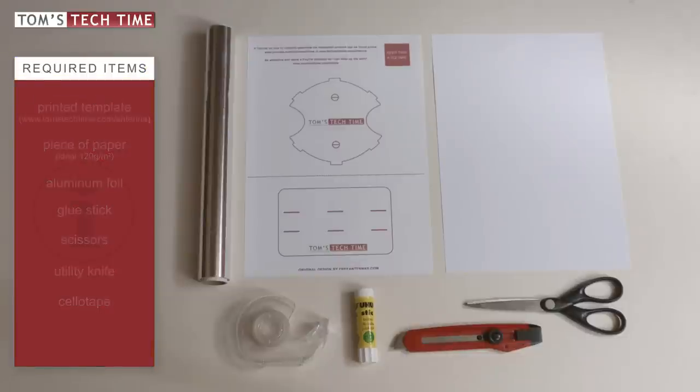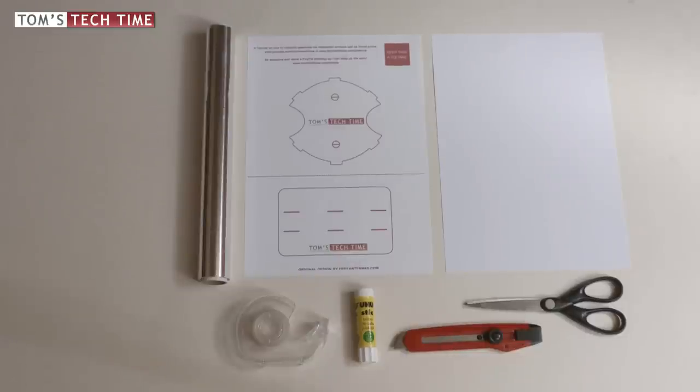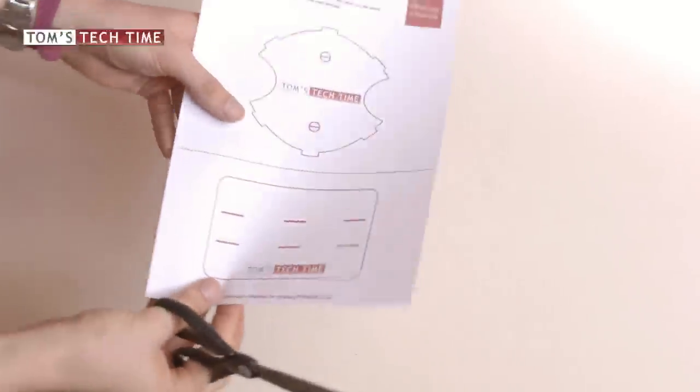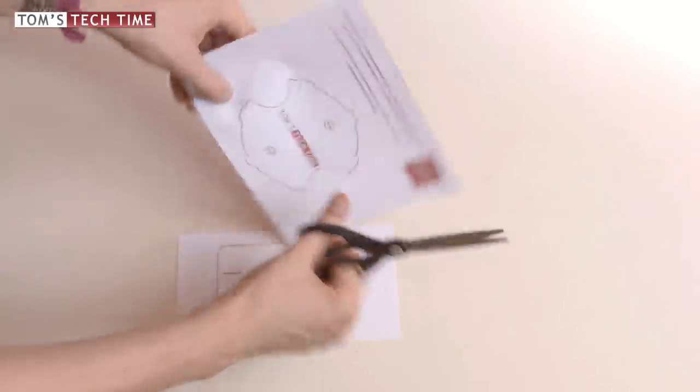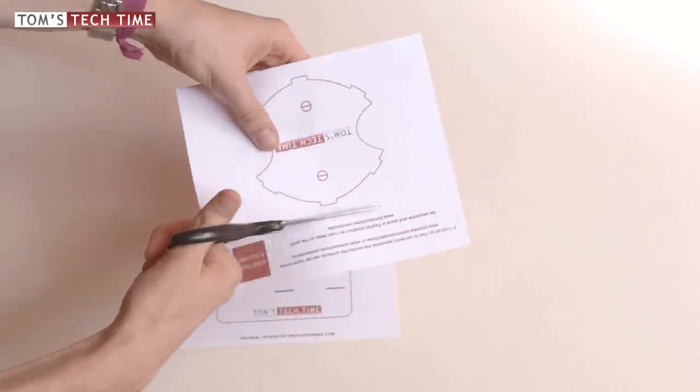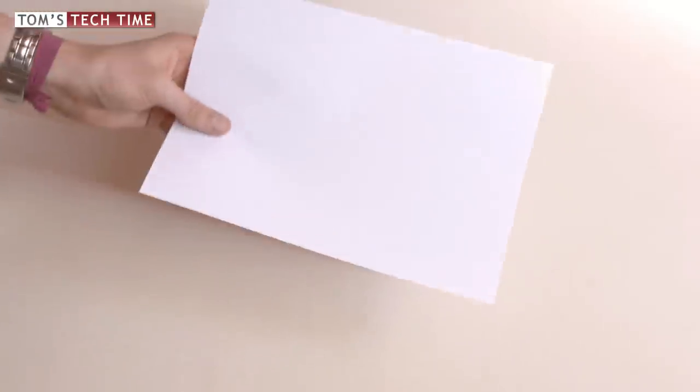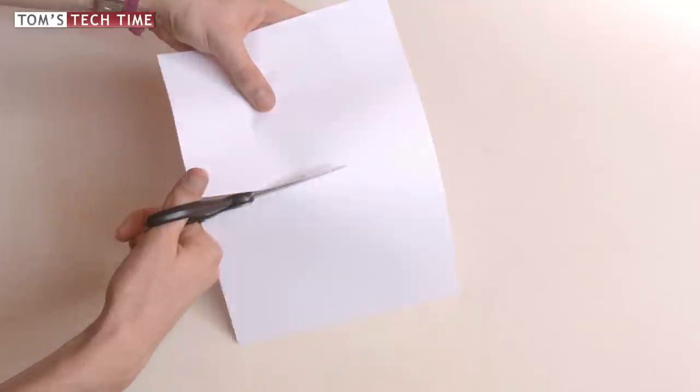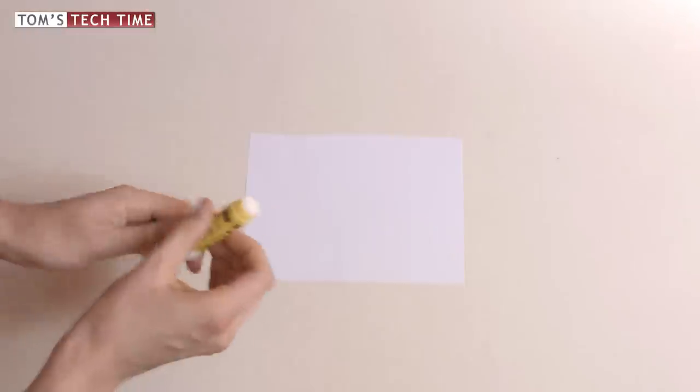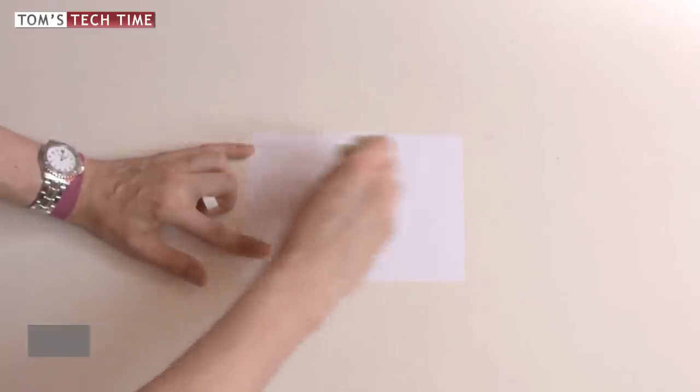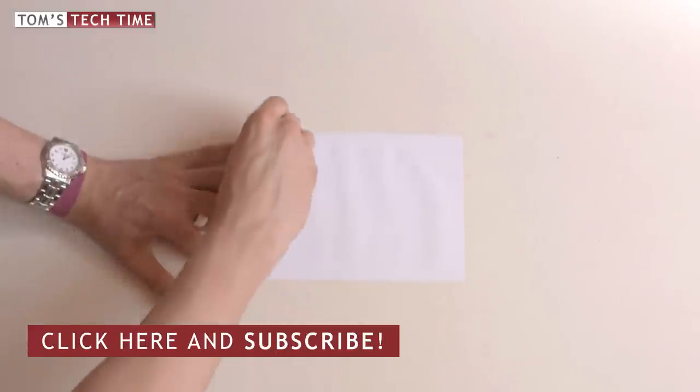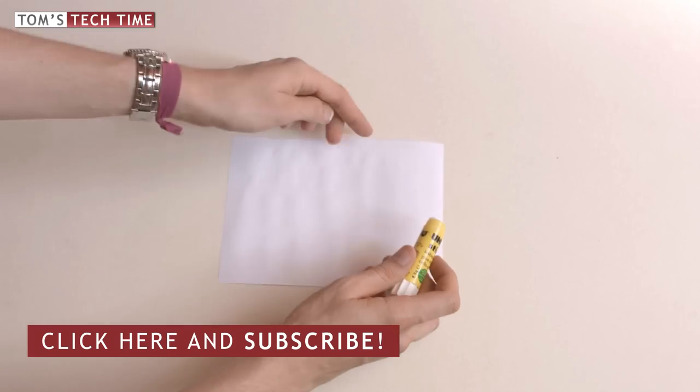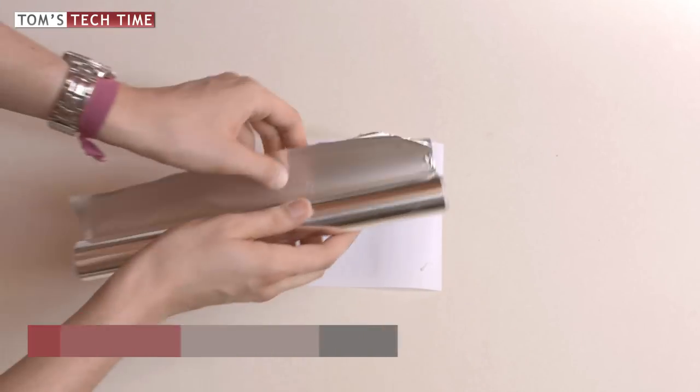Okay, let's get started. First we take the template and cut it in two halves, so that both shapes are separated. Now take the empty paper and cut it in half too. Put some glue onto one of the empty halves. Now take some aluminum foil and stick it onto the paper and smooth it down.